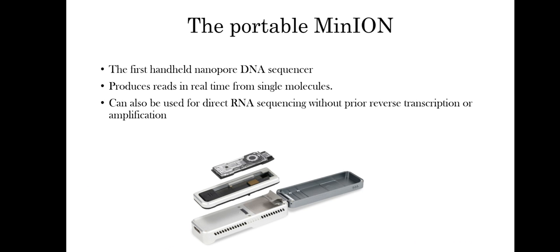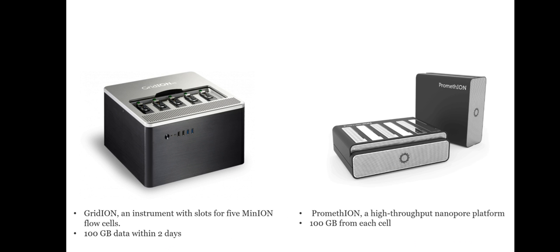The first handheld nanopore DNA sequencer is the portable MinION. It produces reads in real time from single molecules and can also be used for direct RNA sequencing without prior reverse transcription or amplification. Following the introduction of the MinION, there was the release of GridION, which is essentially an instrument with a slot of five MinION flow cells and an integrated computer for base calling. 100 gigabytes of data can be obtained within two days.